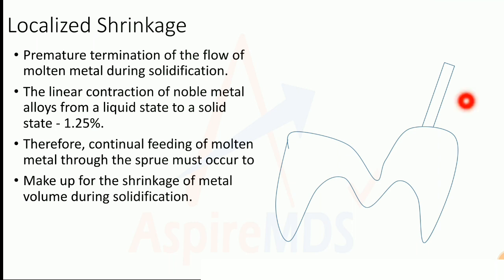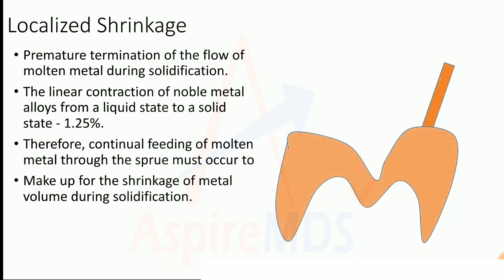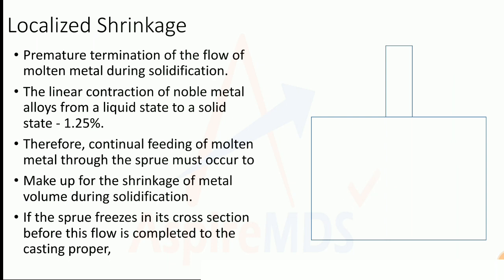Localized shrinkage porosity is due to premature termination of the flow of molten metal during solidification. The pattern is placed within the investment, with a sprue through which molten metal enters the pattern. Normally, the molten metal enters through the sprue, fills the pattern, and solidifies to form a complete casting.